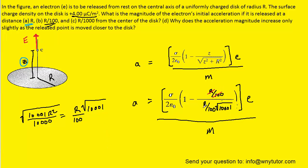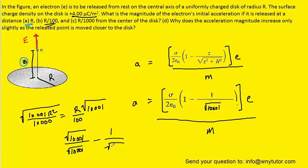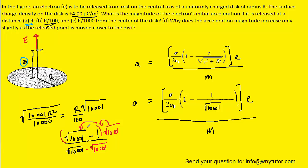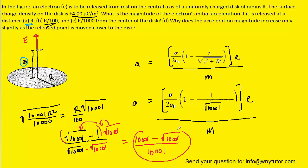The R over 100 terms cancel in numerator and denominator. With the placeholder of 1, we have in parentheses 1 minus 1 over the square root of 10,001. Finding a common denominator, we write 1 as the square root of 10,001 over the square root of 10,001, then subtract 1 over the same denominator to pack them into a single fraction. Rationalizing the denominator by multiplying by radical 10,001: radical 10,001 times radical 10,001 becomes 10,001, and minus radical 10,001 remains, all over 10,001.